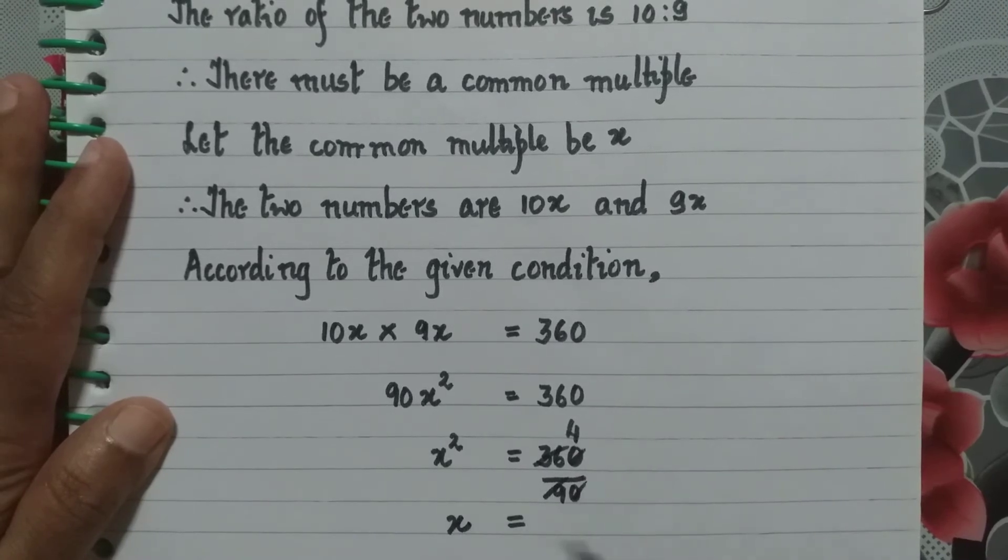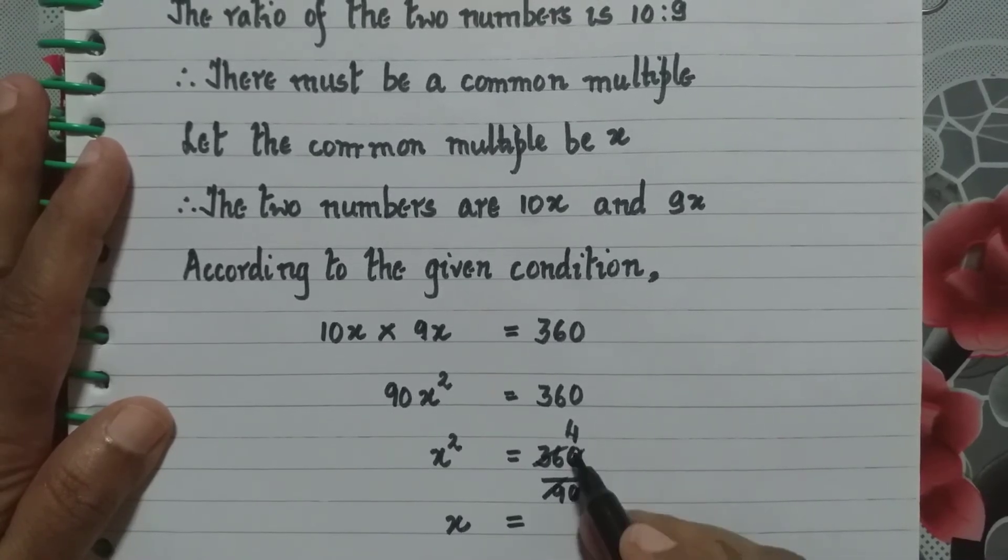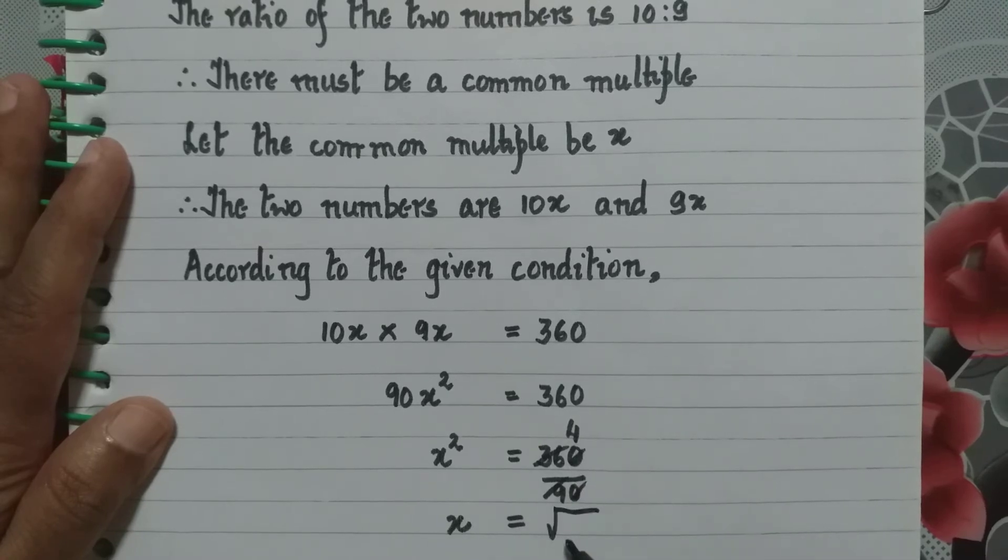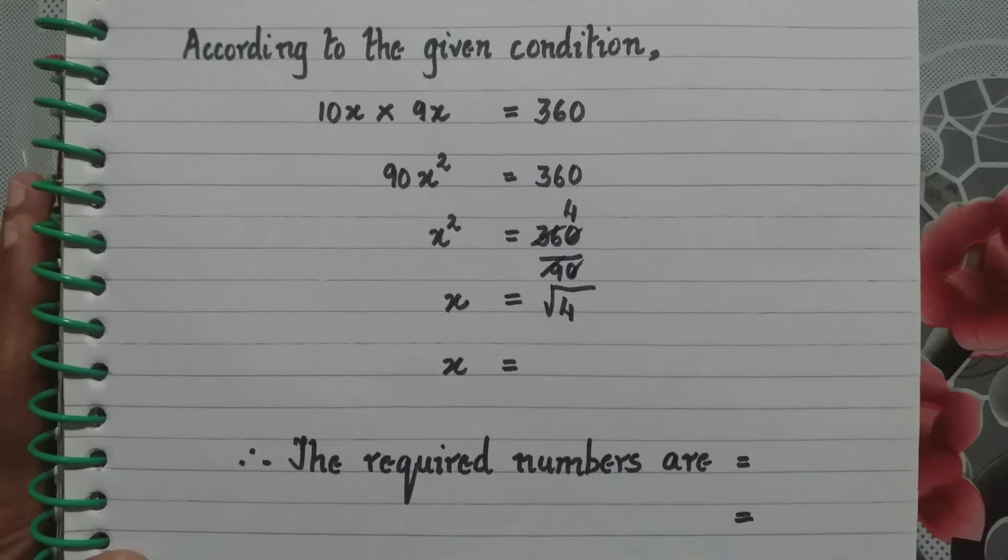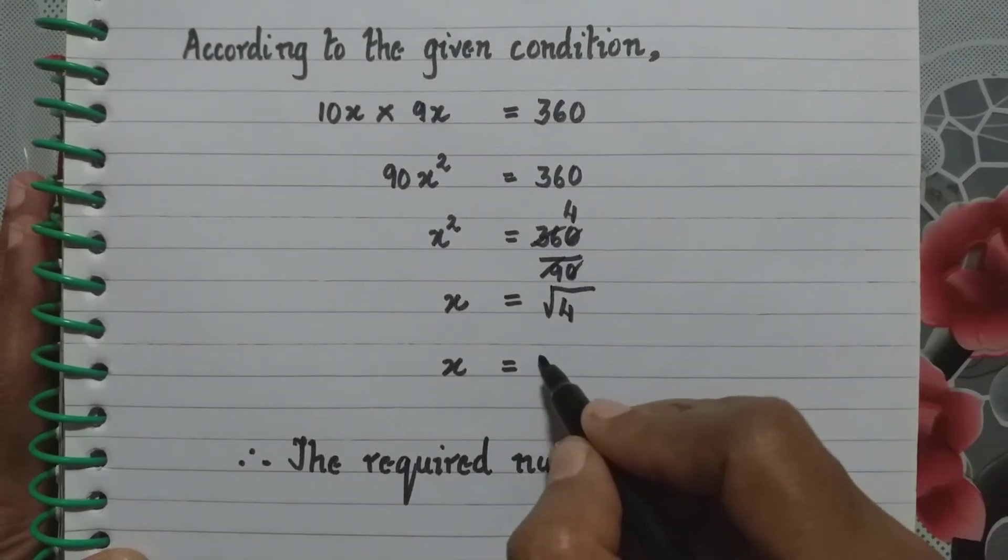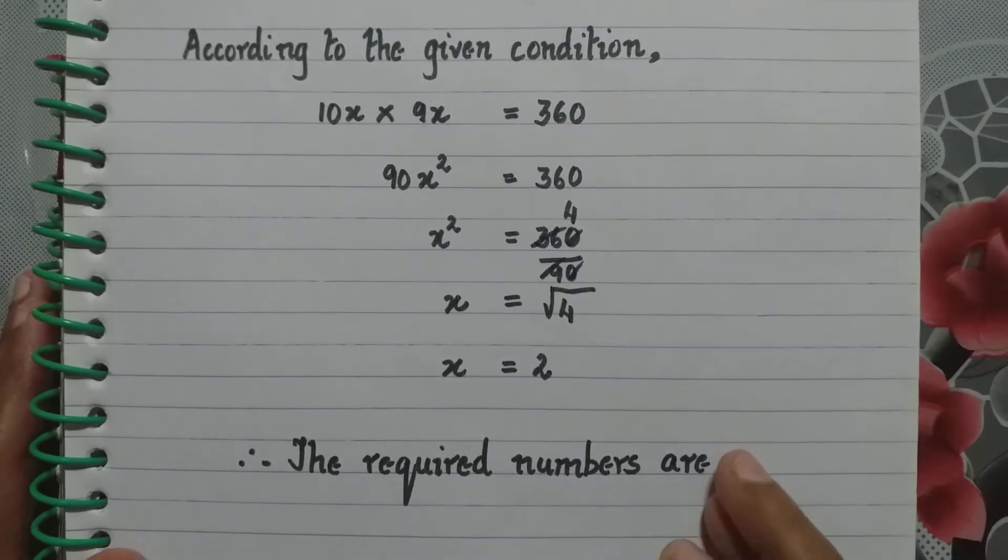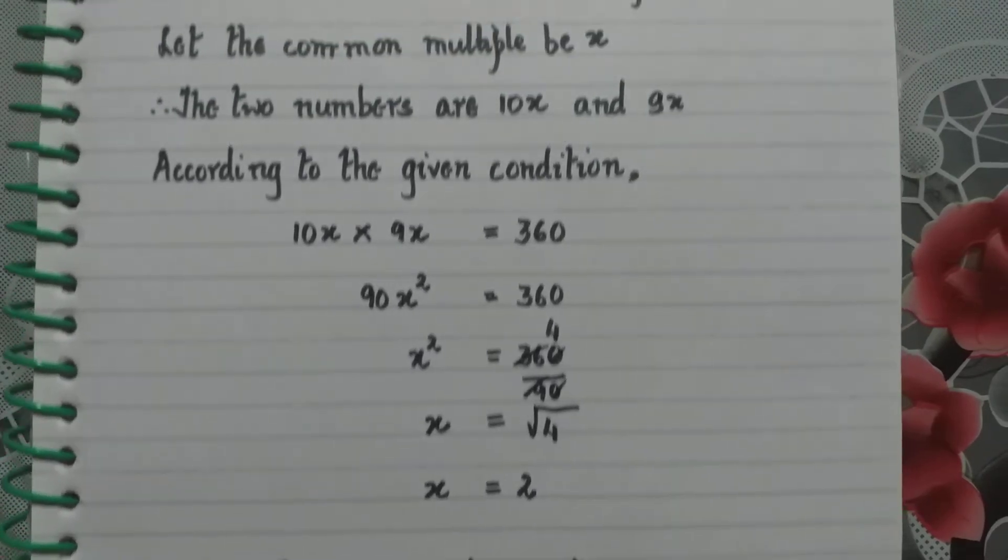If we want to find out what is x, how will we find it? By taking the square root of 4. So x equal to square root of 4. Therefore x is equal to 2.